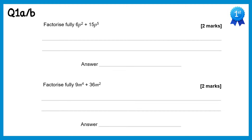For this first question we need to factorise into a single bracket. We look for the highest common factor of 6p squared and 15p to the 5 — that's 3p squared. Then to work out what goes inside the bracket, we consider what we would times this by to get 6p squared, that's times 2, and to get 15p to the 5, that's times 5p to the power 3.